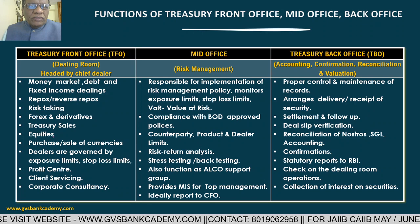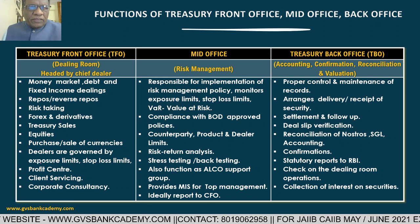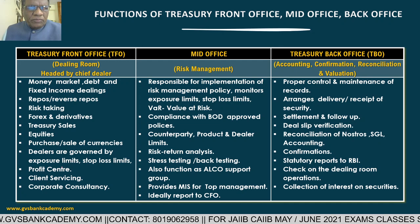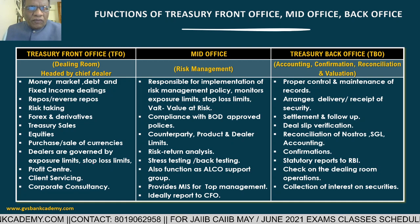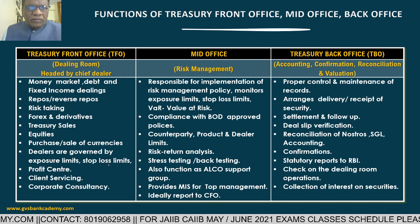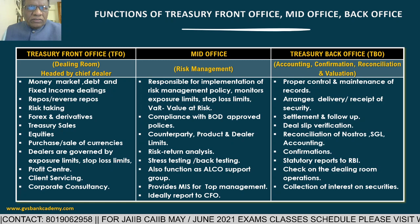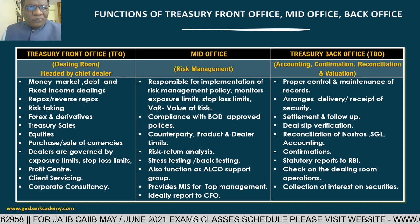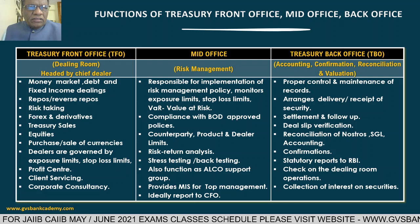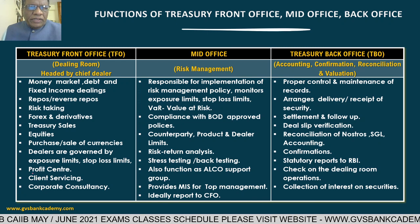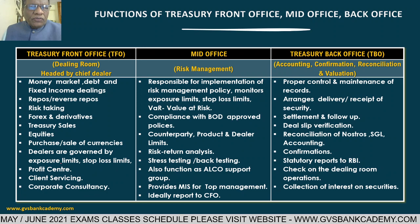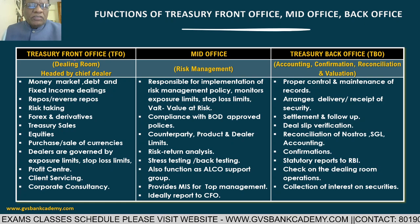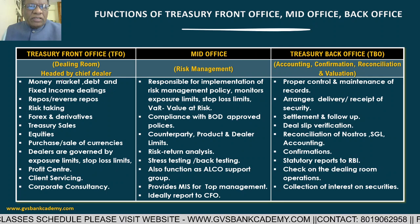The front office staff members - the dealers - are governed by exposure limits. Whatever exposure limits are given by the bank as per investment policy, they have to follow those exposure limits while dealing in the market. They also follow stop loss limits, cut loss limits, and take profit limits as per investment policy guidelines. Since it is taking risk, the treasury front office is a profit center - it has to post profits daily, quarterly, and annually. It is also a client servicing group, serving bank customers with treasury-related products.